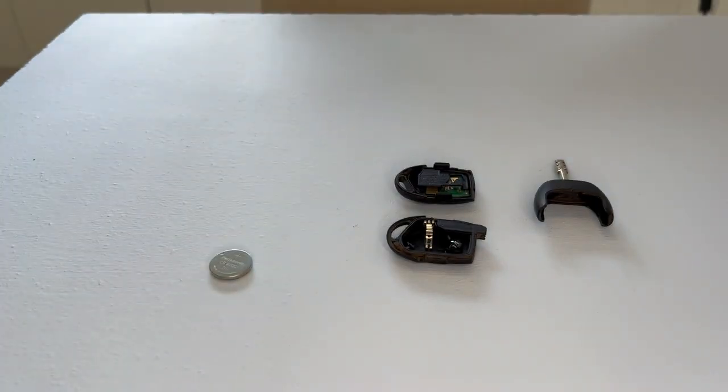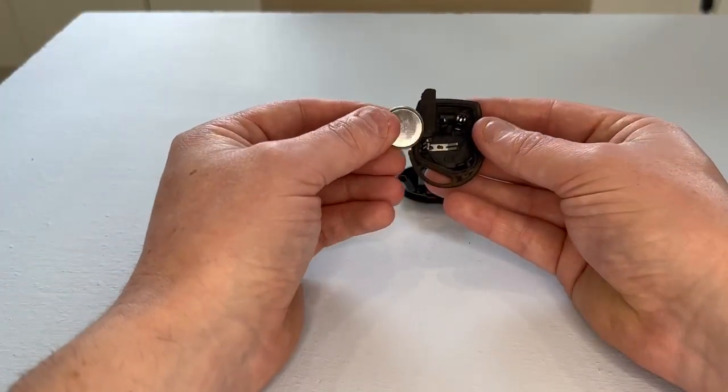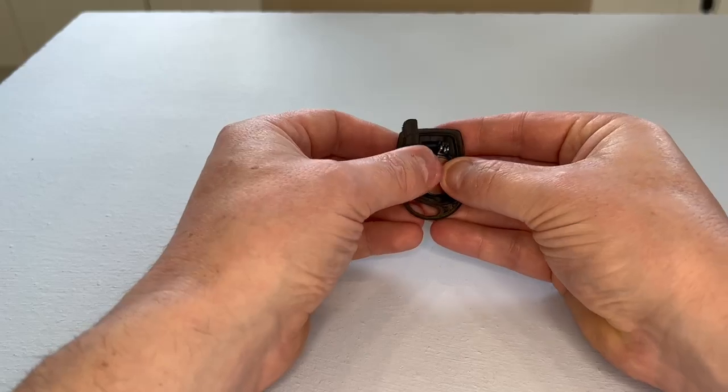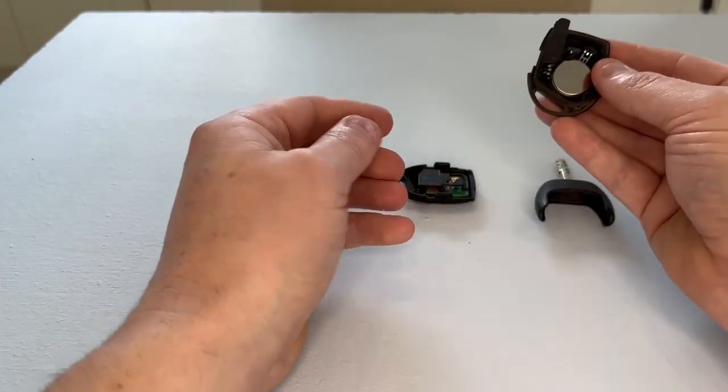We simply get our new key fob battery and pop it back into the housing, making sure on this one that the writing is facing downwards, like so, and we know it's in its correct location.